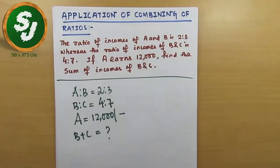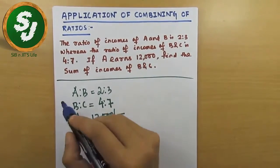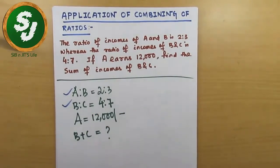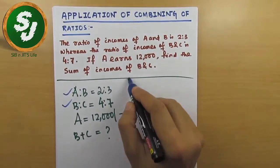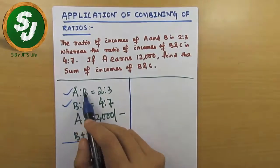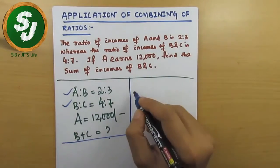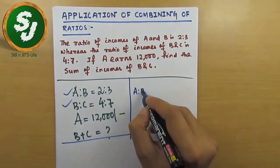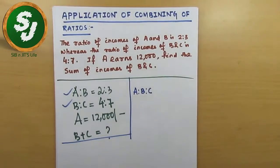But one very important thing that I should suggest you: when you see these kinds of two different ratios, I would recommend you to combine them first. Whenever in any question you see two different ratios like this, A is to B and B is to C, just combine them A is to B is to C.